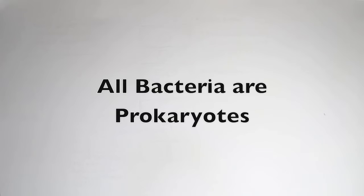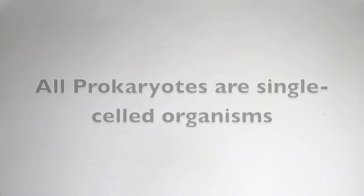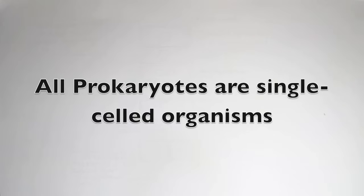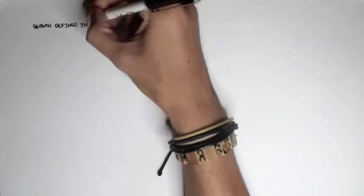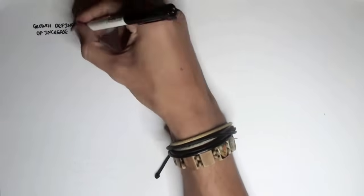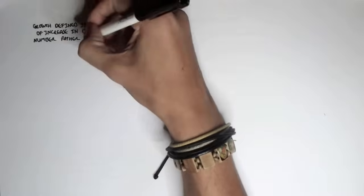Now an important thing to know before looking at the growth of bacteria is that we have to understand that bacteria are prokaryotes, meaning they are single-celled organisms. Humans have multiple cells making up one organism. Bacteria has only one cell making up that organism. So the growth of bacteria is defined in terms of an increase in cell number rather than cell size.